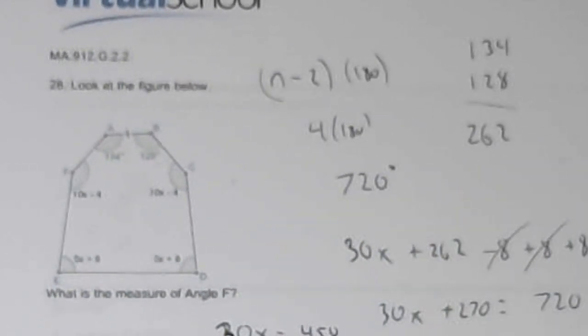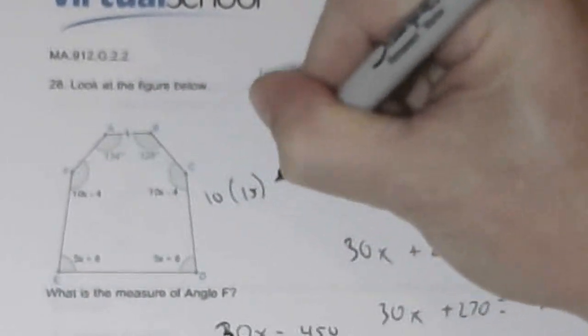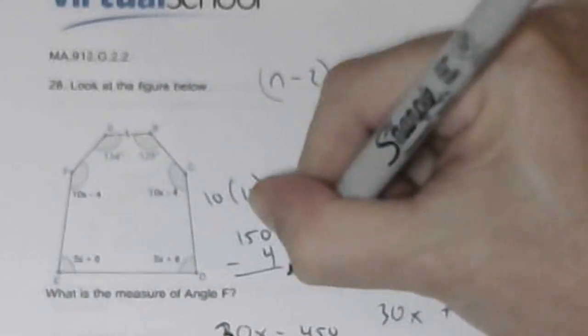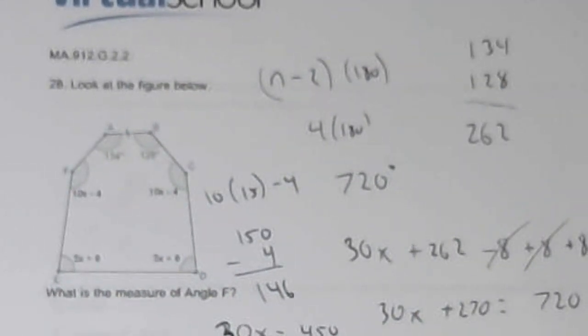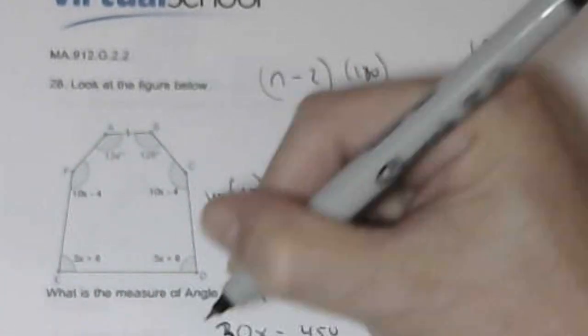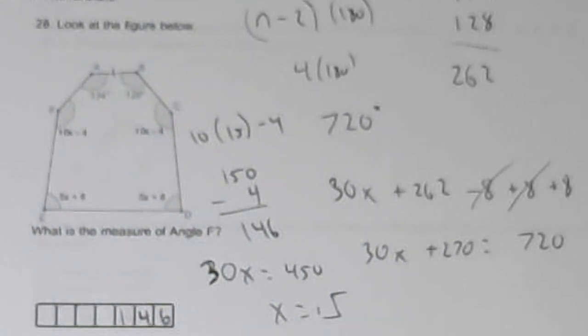x is 15. If x is 15, then angle F is 10 times 15 minus 4. 150 minus 4, it should give me 146. And I assume I'd write it here, 146. That last one's a little all over the place.